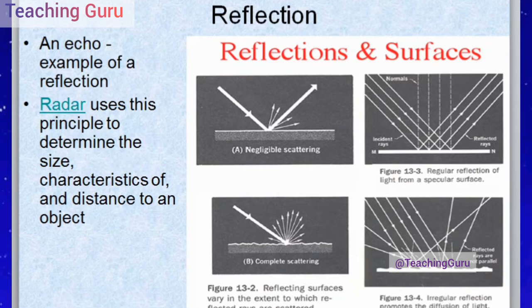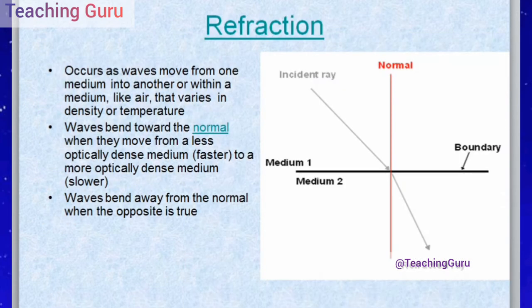Next is refraction. Refraction occurs when waves move from one medium to another — the medium can be rarer or denser. When a wave moves from one medium into another, or within a medium like air that varies in density or temperature, there will be a difference in density and temperature between the first and second medium. The wave bends toward the normal when moving from a rarer medium to a denser medium.